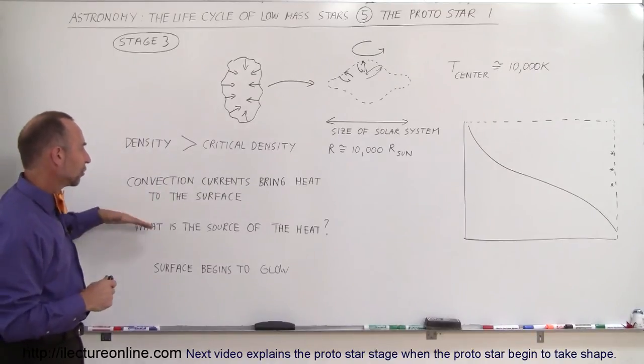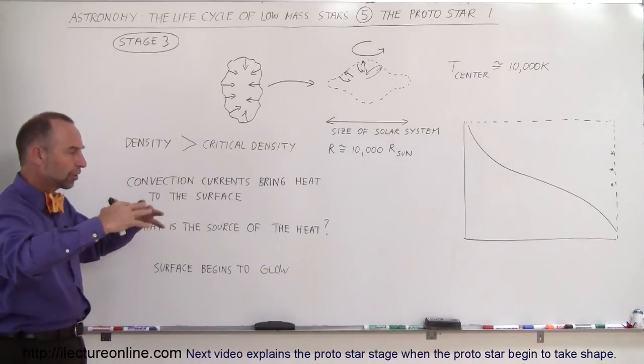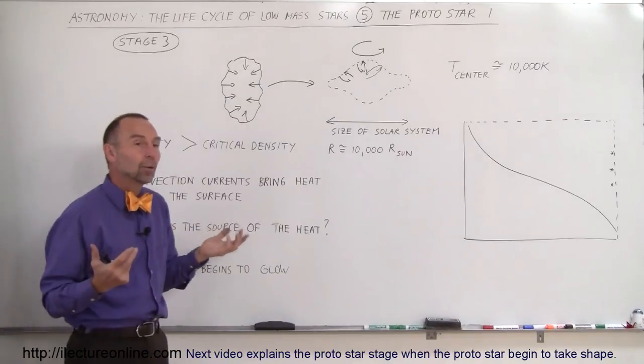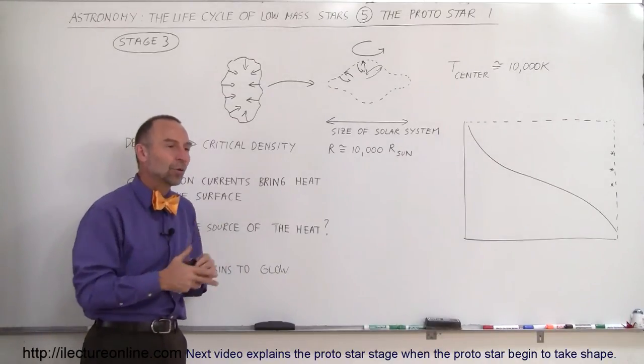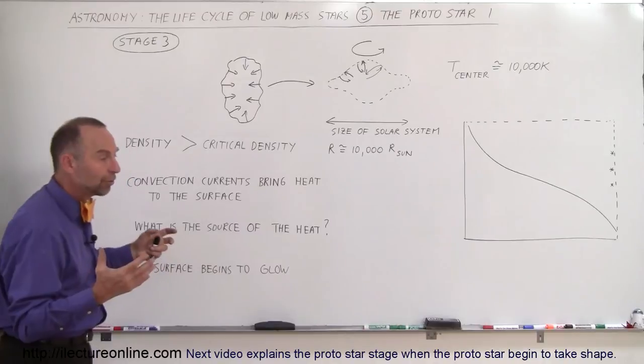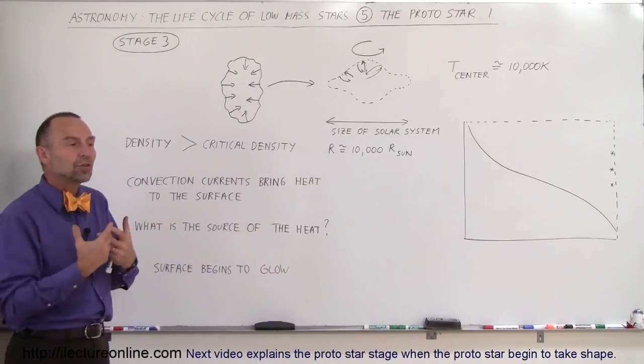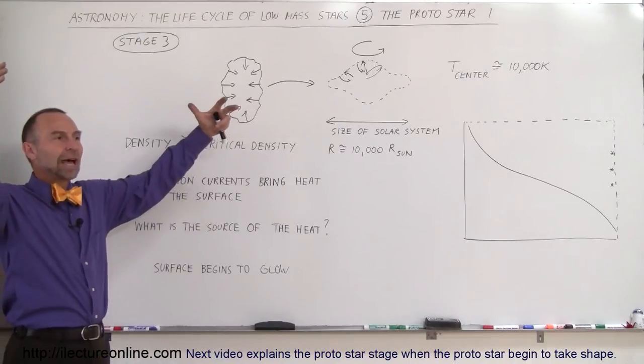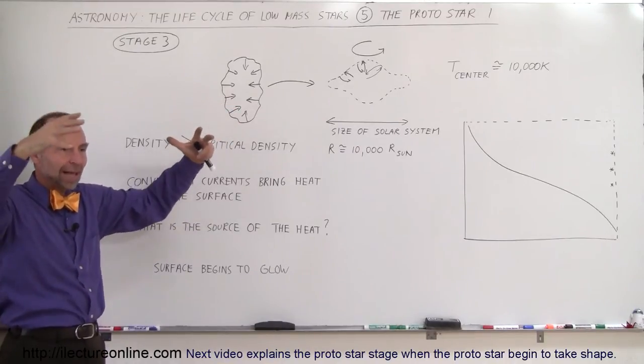The convection currents continue to bring more heat to the surface. What is the source of that heat? One is increased pressure, which is involved in increased temperature. But that increased pressure comes from the energy as gas continues to collapse downward. It's potential gravitational energy.